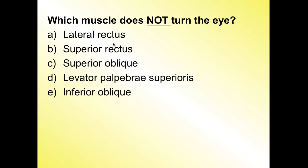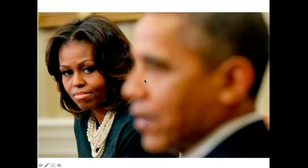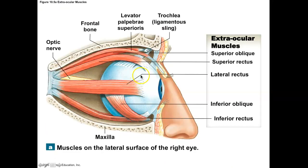A quick review question: what muscle does not turn the eye? The answer is the levator palpebrae superioris — it is the only muscle on the list that does not turn the eye. This muscle elevates the upper eyelid. Palpebrae means eyelid, and superioris describes it as the upper eyelid. If you follow it along in the diagram, it inserts into the flesh of the upper eyelid, while all the other muscles insert onto the eye itself. All of these are extrinsic muscles of the eye.